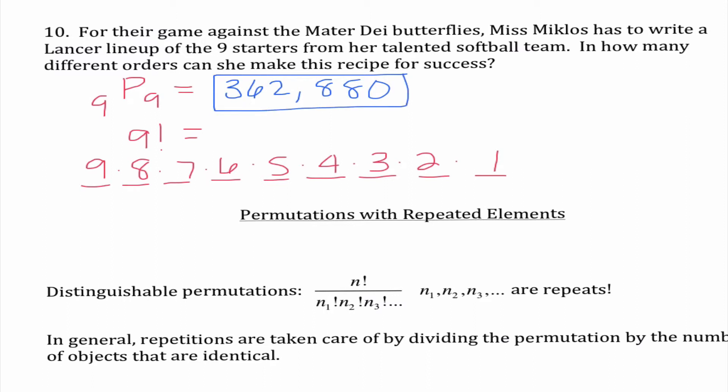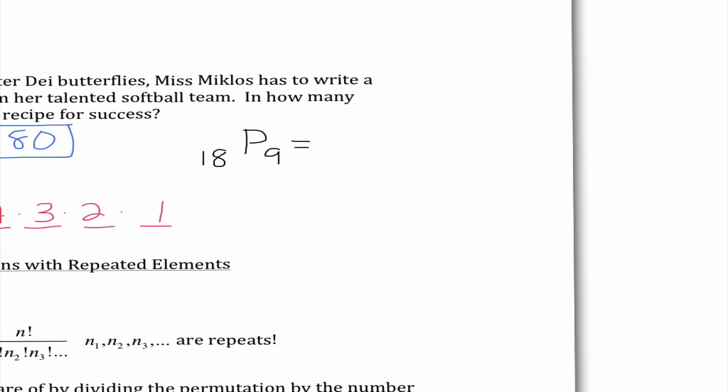So if any of you guys thought coaching and figuring out who the starters are was easy maybe this gives you a different perspective. In fact let's say I was choosing the nine starters out of all of my Lancer varsity team this year. Our softball team has 18 varsity players so if I was choosing the nine starters I would have to do 18P9 which would be such a large number that my calculator cannot even handle it. 1.76 times 10 to the 10th power. So the possibilities are almost endless on the different ways that we could write the lineup.